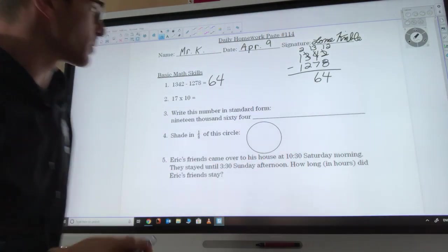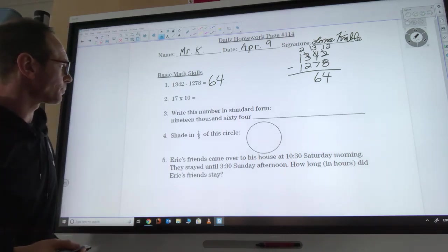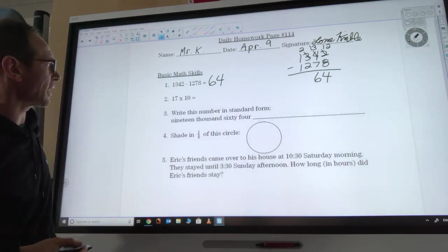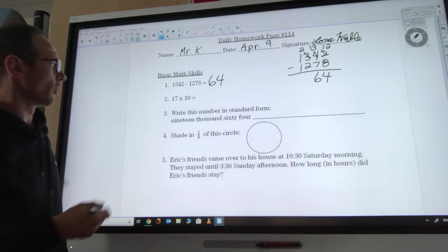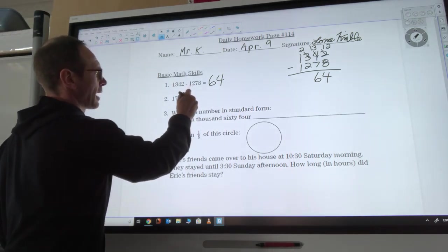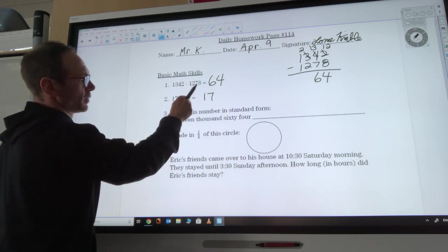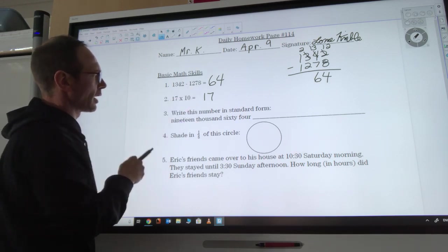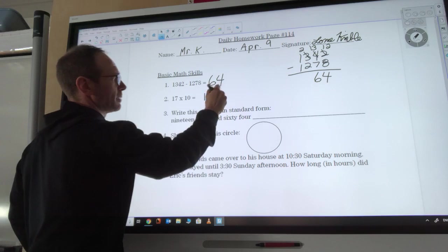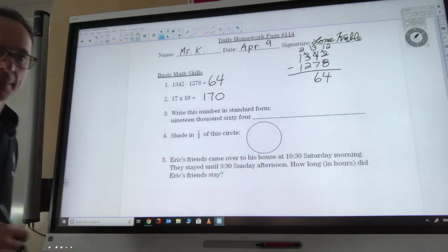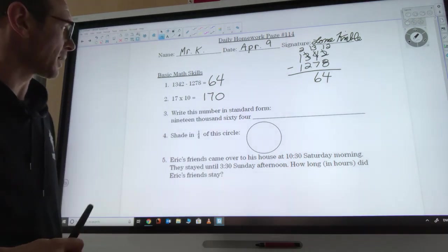Number 2 says 17 times 10. Well remember, 17 times 1 would be 17. So 17 times 10, I've moved the 1 over to the tens place, so I need my answer to move over by a place value too. So my 17 becomes 170.